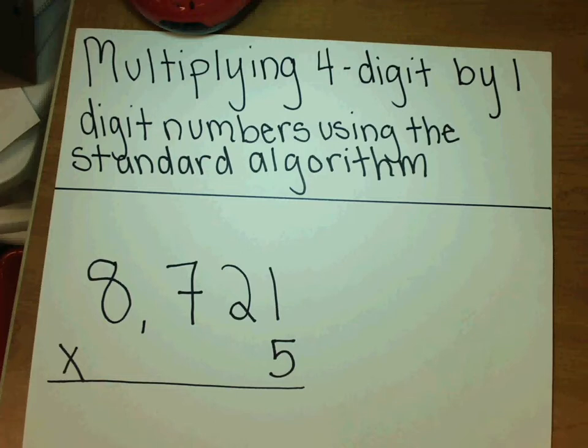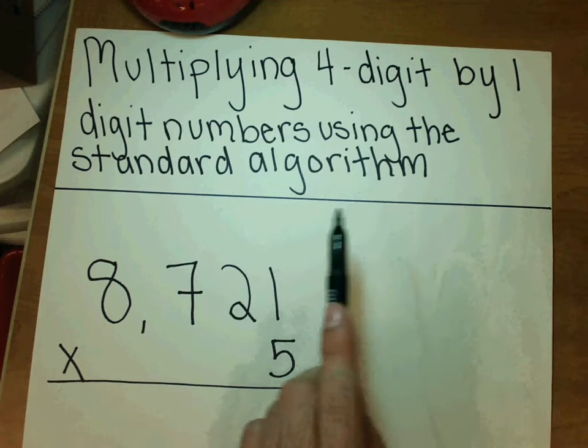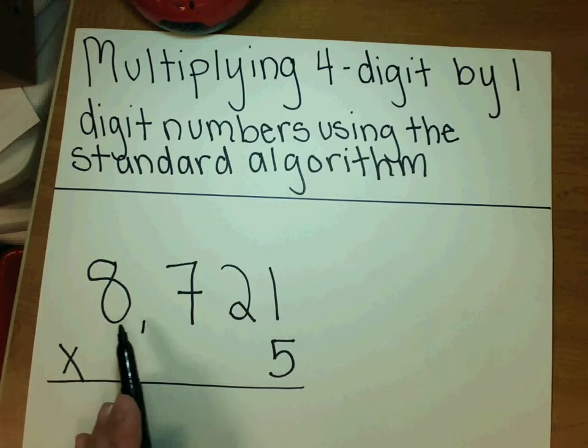Hello everyone, and today I'm going to be reviewing multiplying a four-digit by one-digit number using the standard algorithm that we've been practicing in class. So this is our four-digit number, 8,721, and five is our one-digit number.